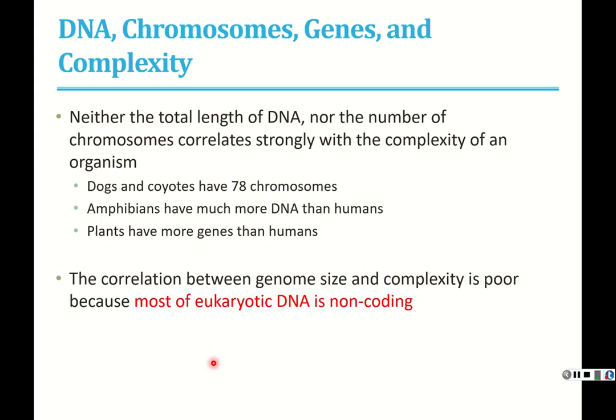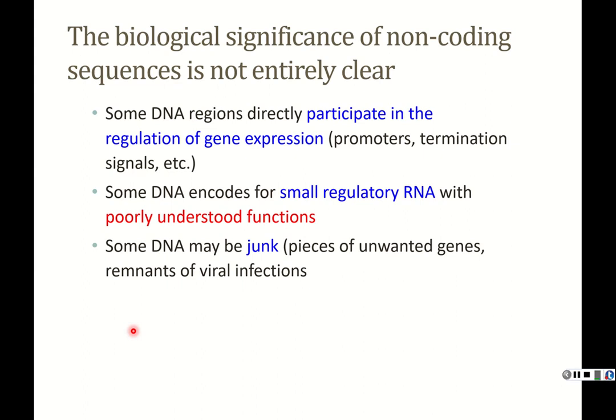Neither the total length of DNA nor the number of chromosomes correlates with the complexity of an organism. For example, dogs have 78 chromosomes, amphibians have much more DNA than humans, and plants have more genes than humans. That's because in eukaryotic cells, most of the DNA is non-coding, and the biological significance of this non-coding DNA is not entirely clear — there's still lots of research going on.